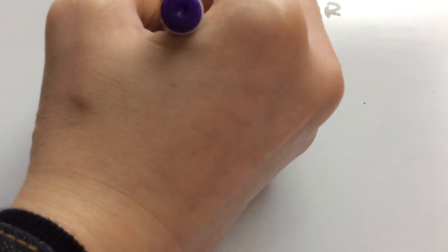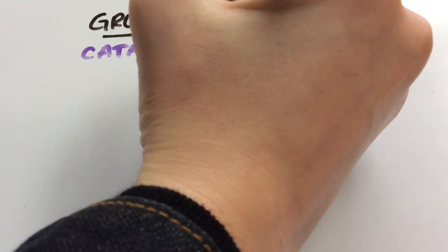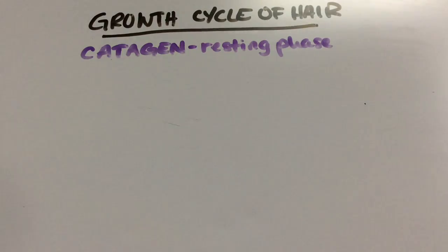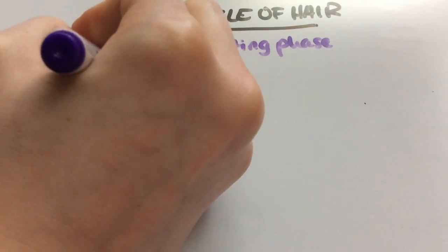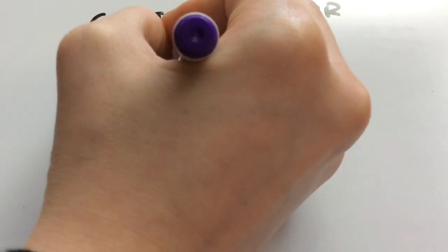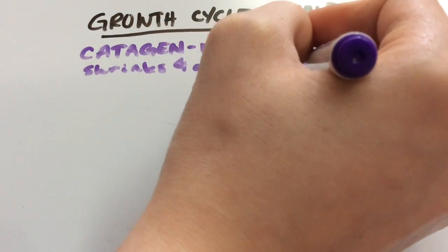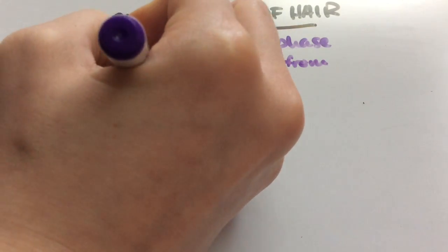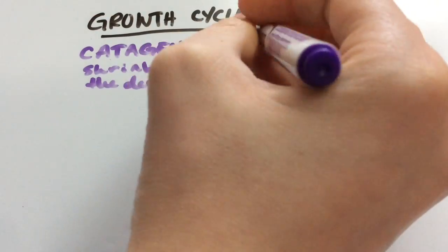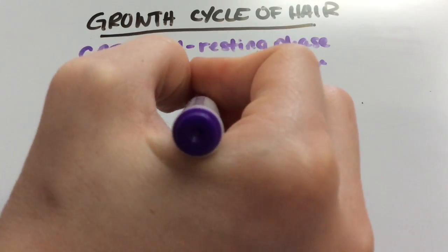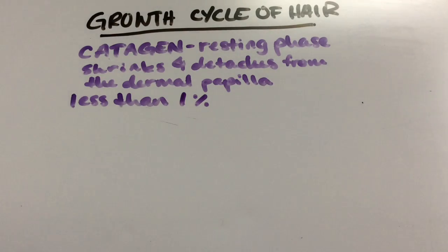The second phase is the catagen phase - a brief transition period considered the resting phase. During this phase, the follicle shrinks and detaches from the dermal papilla, and the hair bulb starts to disappear. Less than 1% of hair is in the catagen phase at any one time. It's very short, lasting one to two weeks.